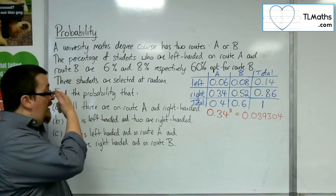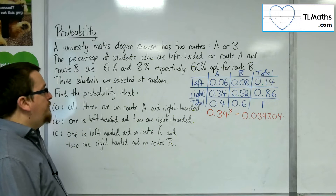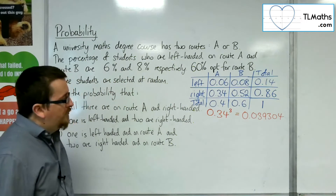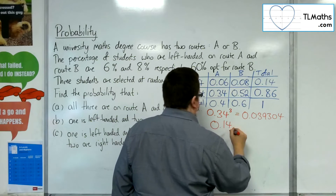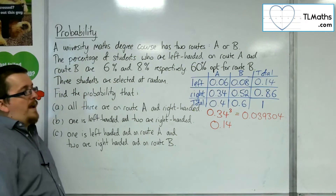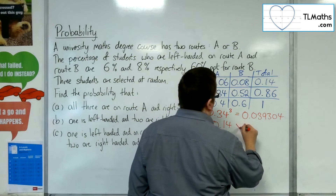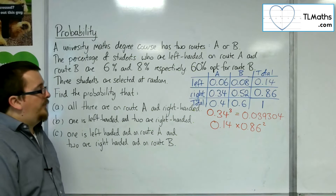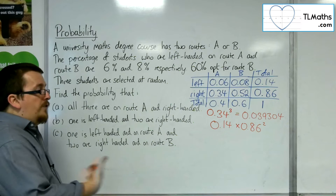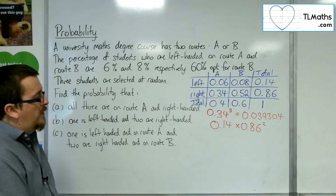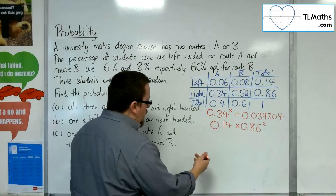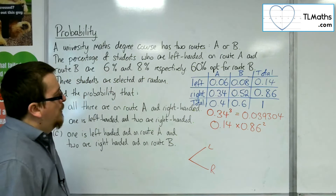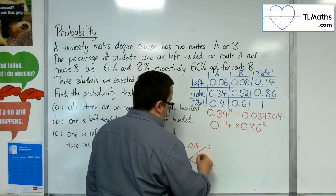Now, if one is left-handed and two are right-handed, the probability of picking someone who is left-handed is 0.14, and the probability of picking someone who is right-handed is 0.86. Thinking about this as a probability tree, the first choice of person is either left-handed or right-handed — that's where the 0.14 and 0.86 come from.